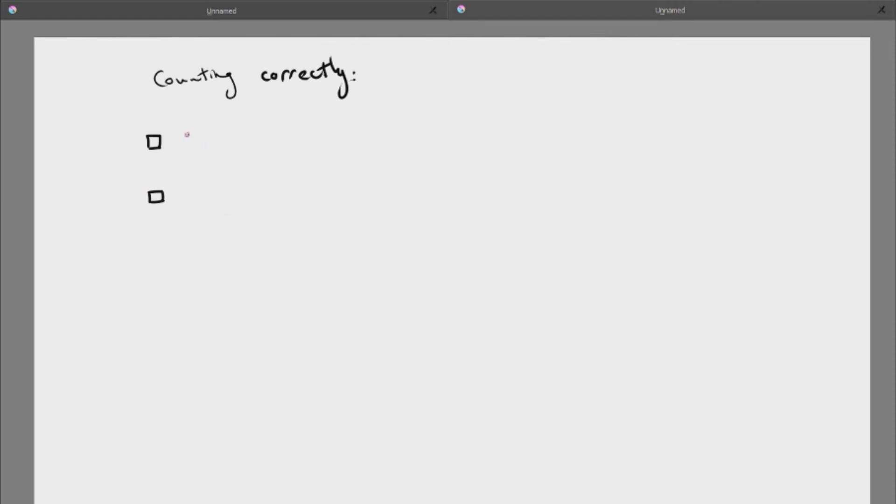I have two checkboxes that I need to check. First of all, I want to count or consider everything that we should. That means I don't want to miss anything. I want to count everything I should be counting. I don't want to miss something that actually should be included.